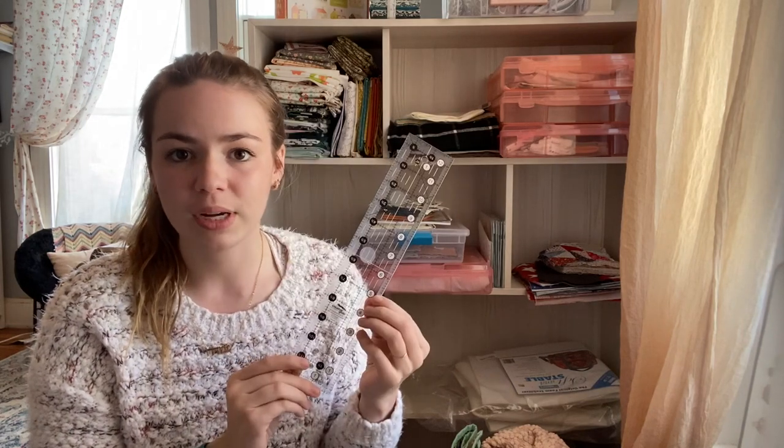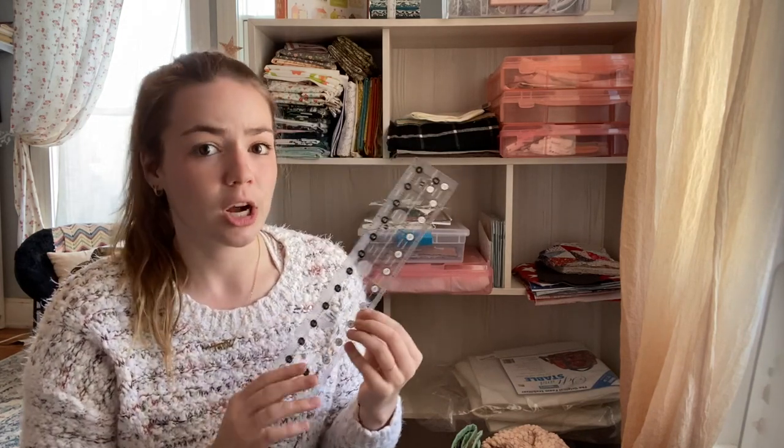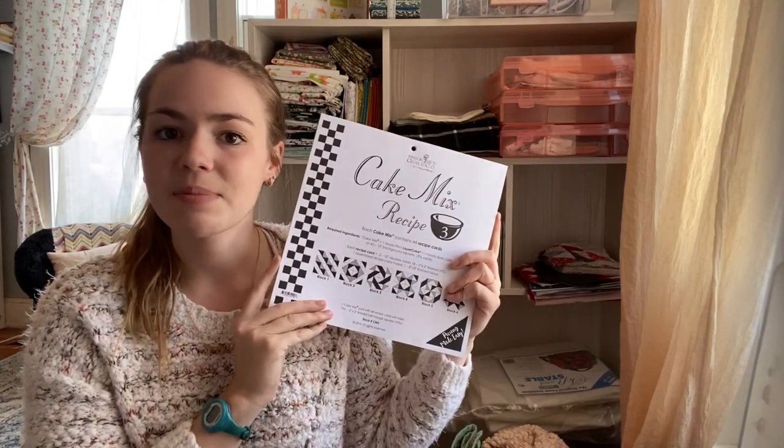This is a 12 and a half by two and a half inch Creative Grids ruler. This is my favorite just to throw in my sewing bag. It works with most projects. You're also going to want a 45 millimeter rotary cutter, a cake mix or cupcake mix recipe of your choice, as well as your fabric.